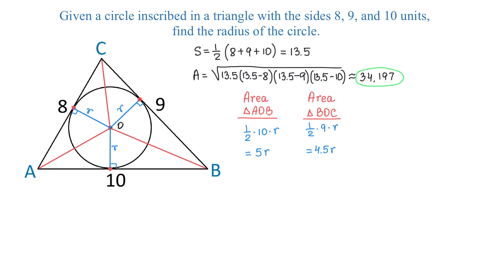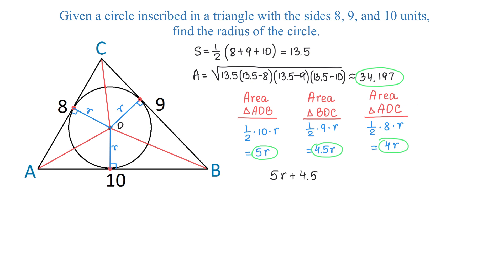In triangle AOC, the base is 8 and the height is R. The area is one half times base 8 times height R, which equals 4R. If we add these areas together, we will get the area of triangle ABC. So, 5R plus 4.5R plus 4R equals 34.197. If we solve this equation, we will get the radius of the circle.